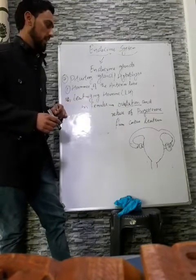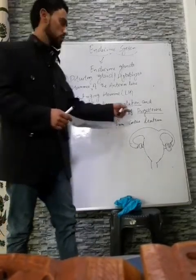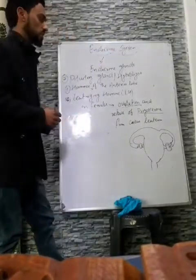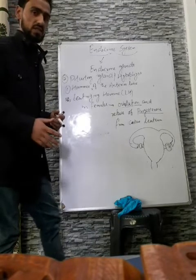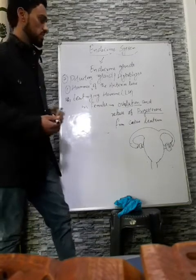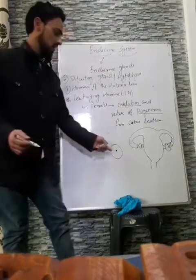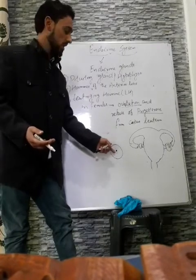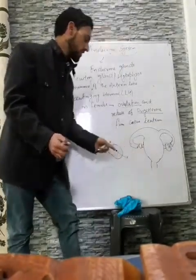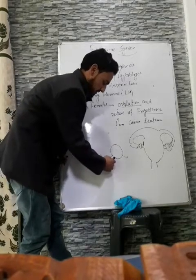The second function of LH in females is to stimulate the release of progesterone from a structure known as the corpus luteum. After the egg is released from the follicle during ovulation, the empty follicle remains in the ovary. This empty follicle without the egg is known as the corpus luteum, and LH stimulates it to secrete the female sex hormone progesterone.